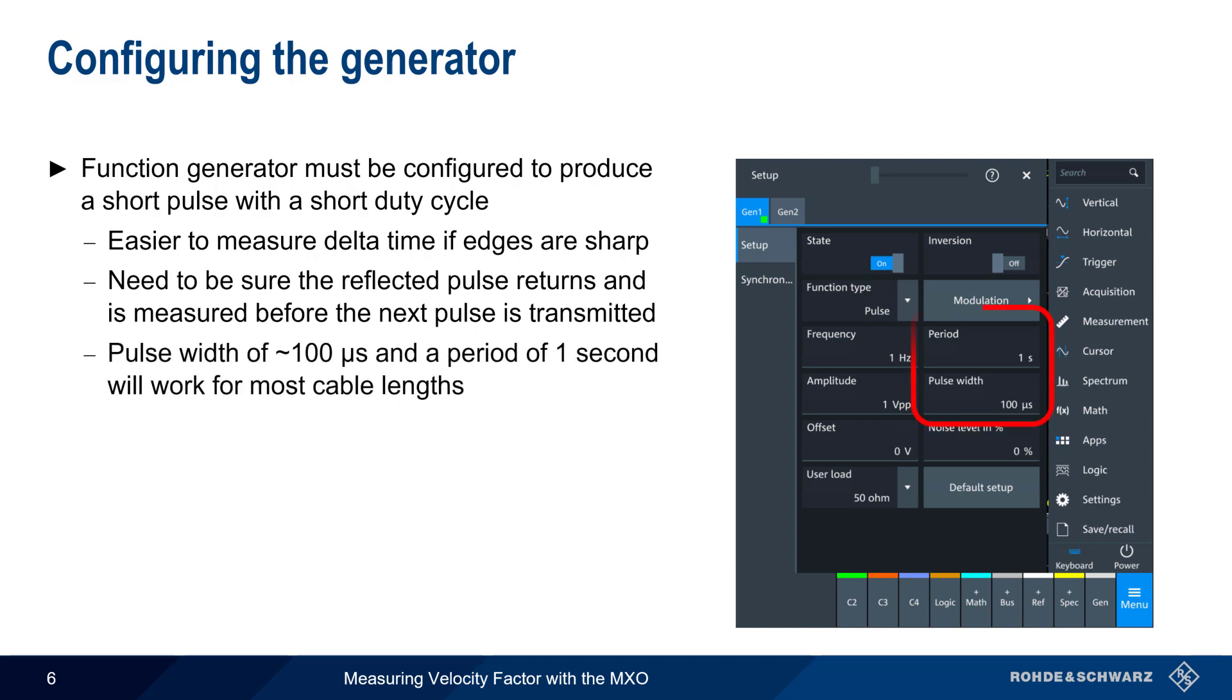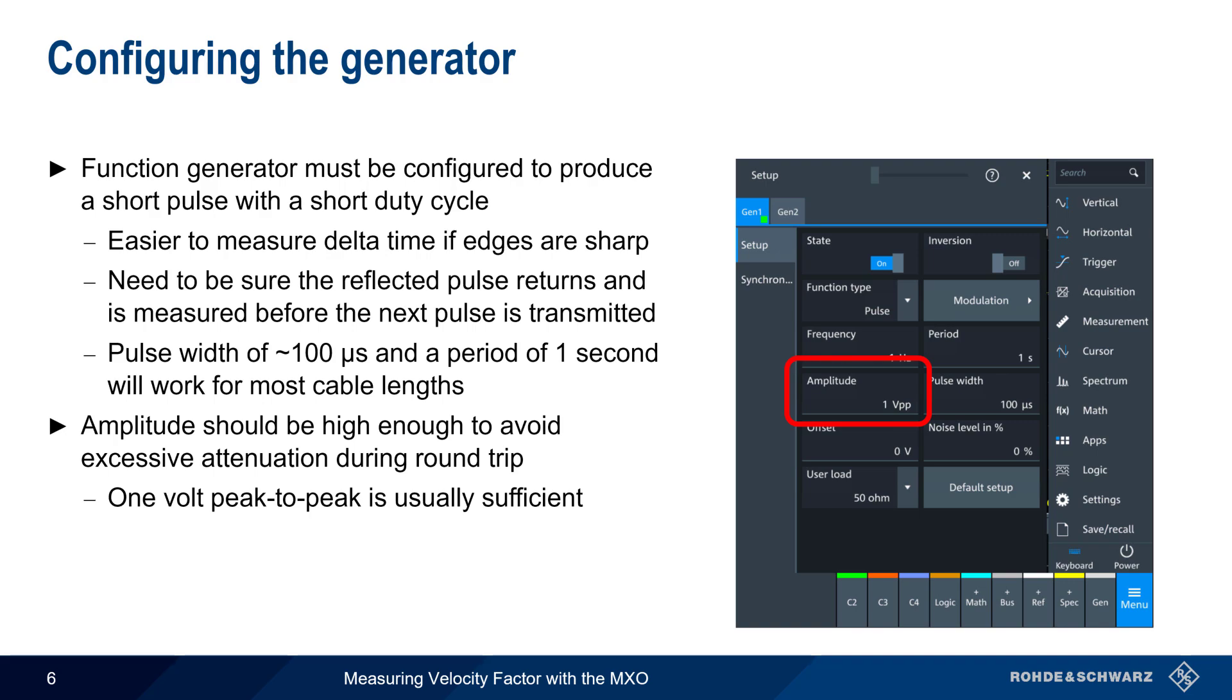In most cases, a pulse width on the order of 100 microseconds and a period on the order of one second will work for most cable lengths. The pulse must also have enough amplitude to ensure that the reflected pulse can be detected and measured. A value of 1 volt peak-to-peak is typically sufficient. And of course, be sure to enable the generator. Although we're using the MXO's internal function generator in this presentation, an external function generator could also be used.